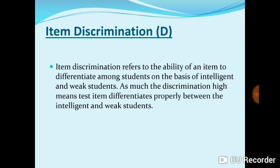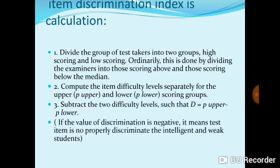To calculate the discrimination index, the first step is to divide the group of test-takers into two groups: a high-level group and a low-level group, based on their scores. Sequence students by score and divide them at the median into those scoring above and those scoring below. Next, compute the item difficulty level separately for the upper and lower groups. Then subtract the two difficulty levels — subtract the lower group's difficulty from the upper group's difficulty.